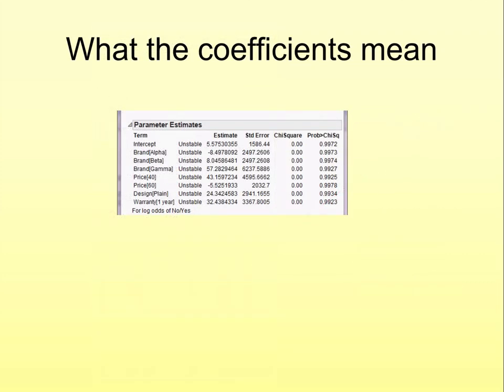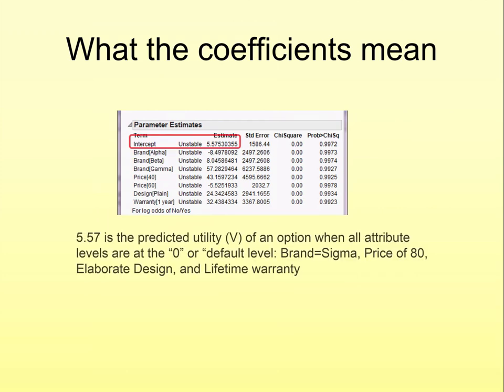So, let me give you a more specific example of this. First, looking at the table right here, we have this intercept value of 5.57. Now, this is the utility of an option when all attribute levels are at the zero or default level. Jump automatically makes the last level of encounters be the default or reference level, which we can see by noting which levels do not have parameter estimates. In this case, our reference option is Brand Sigma, Price 80, Elaborate Design, and Lifetime Warranty, which you notice are the attribute levels which are not listed on the table.